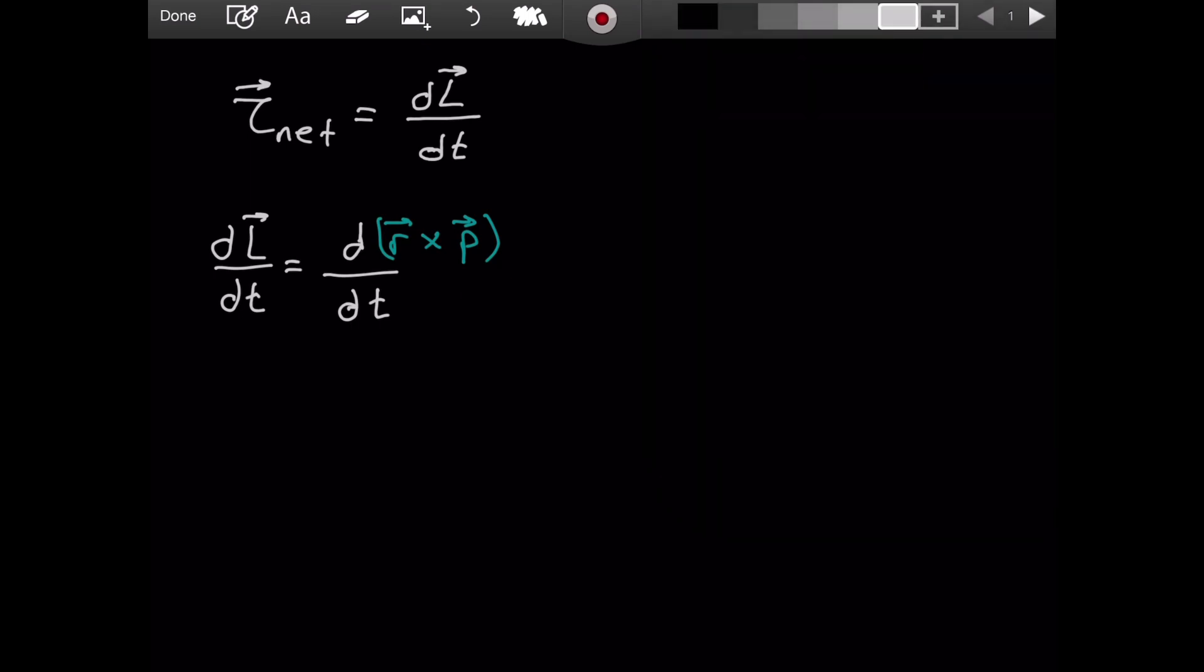So this will equal... well, we see that we have the derivative of a product. It's a cross product, but it is a product at the end of the day. So how do we find the derivative of a product? I have a video about this you can access from the cards and description. We will use the product rule. It tells us we take the derivative of the first one, which is dr/dt, and multiply it by the second one, so it's going to be p.